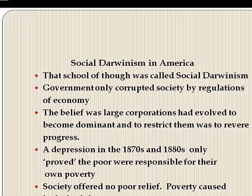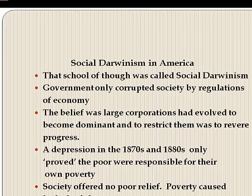Social Darwinists argued that governments could only corrupt society by regulating the economy to the advantage of the poor or workers, who were simply less able to adapt to changing conditions. Social Darwinists believed giant corporations had evolved to become dominant because they had better adapted, and to restrict their operations would be to reverse progress. The depressions of the 1870s and 1880s did not dislodge the opinion that the poor were responsible for their own poverty.